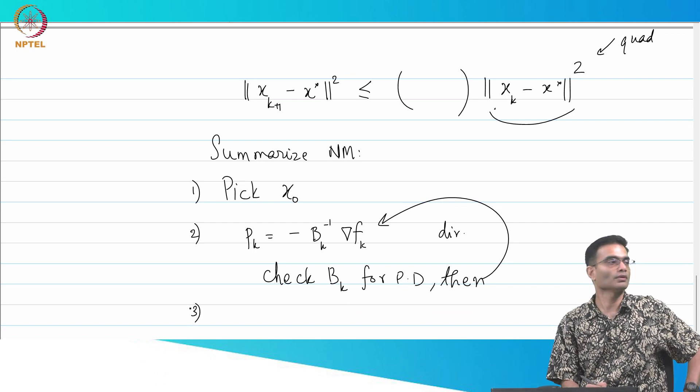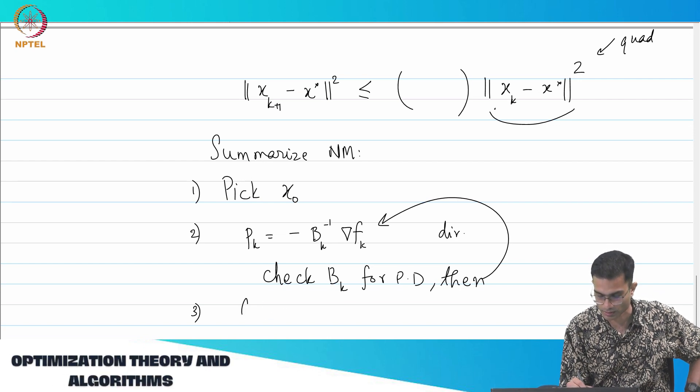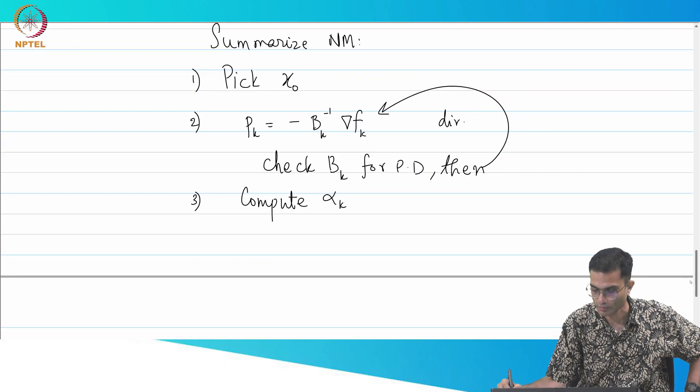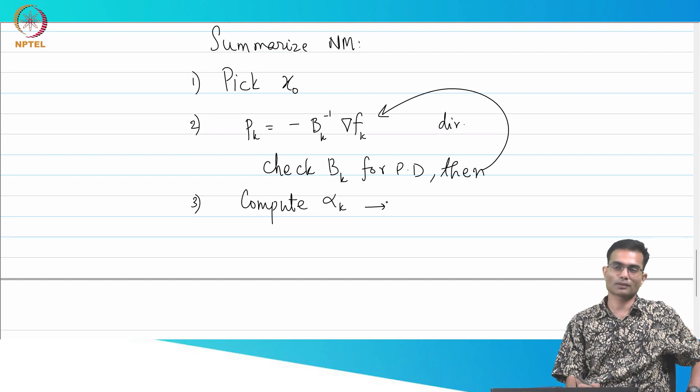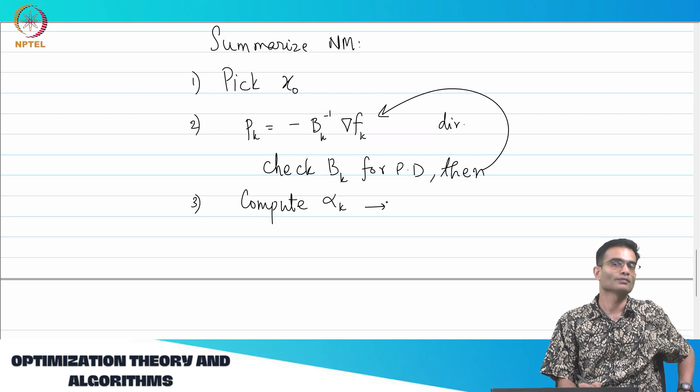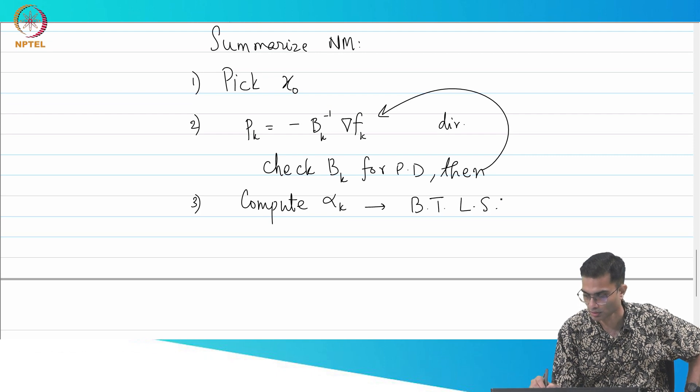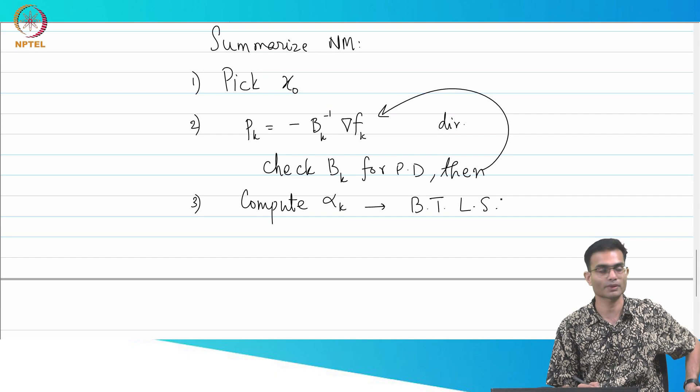So, I got my positive definite check. Supposing it is done. Next, what do I do? Alpha, right? I should not say pick. I say compute. Most popular way of computing alpha is, for example, backtracking line search.